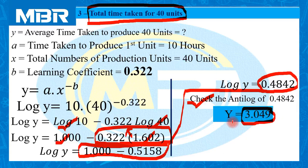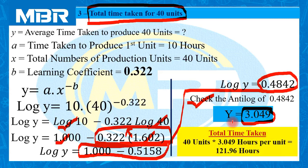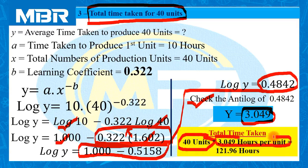Checking antilog of 0.4842 in the log table gives y equals 3.049, meaning the average time to produce one unit is 3.049 hours when 40 units are produced. To get total time for 40 units: 40 units multiplied by 3.049 hours equals 121.96 hours. That is the total time taken to produce 40 units.